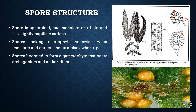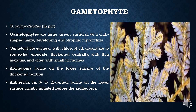When the sporangia are very young they are yellowish or very light in color, because the spores inside lack chlorophyll and appear yellowish. When the spores mature, they darken and become very dark and black when ripe. The spores are liberated by the dehiscence of the annulus. Once liberated, the spores produce a gametophyte.